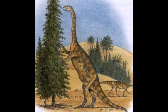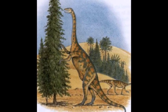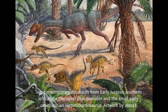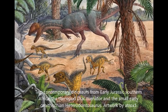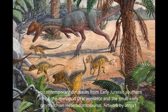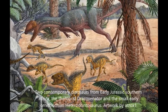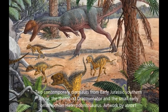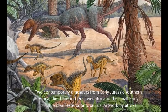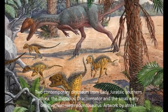Massospondylus is thought to have inhabited wooded floodplains. It shared its habitat with other types of reptiles, including turtles and pterosaurs. There were also other dinosaurs around, including theropods and primitive ornithischians such as Lysutosaurus. There were also cynodonts and early mammal species.